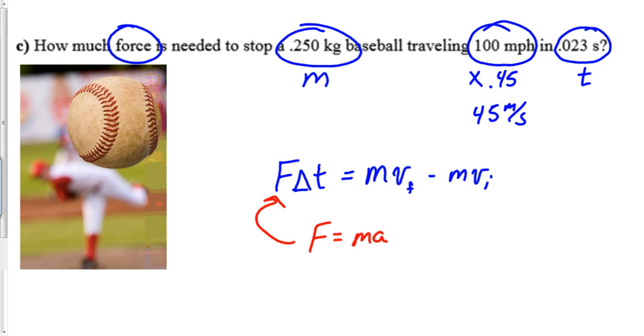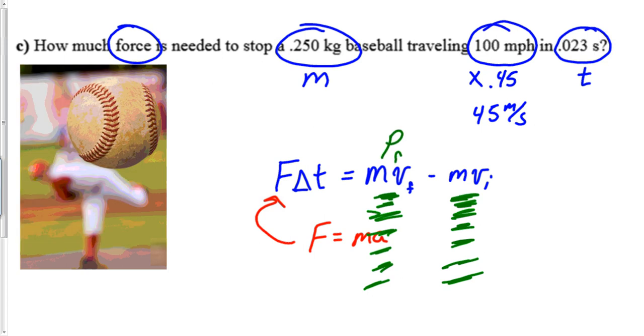Let's actually just see if we can use this FAT equation. Now you should be going Mr. Cole, how come you're actually throwing this into the momentum chapter? Because what is mv? What are those? Those are momentums. So this is like momentum final minus momentum initial.